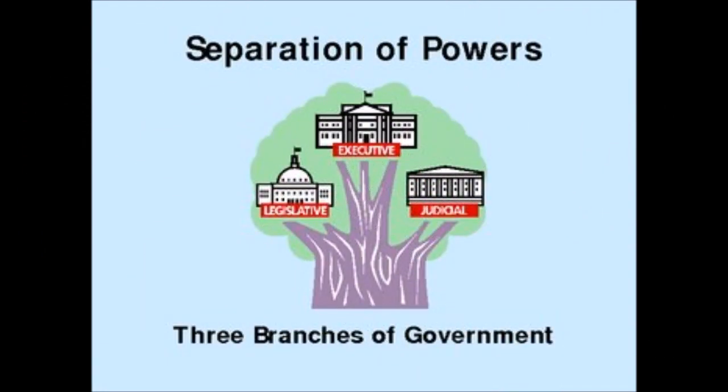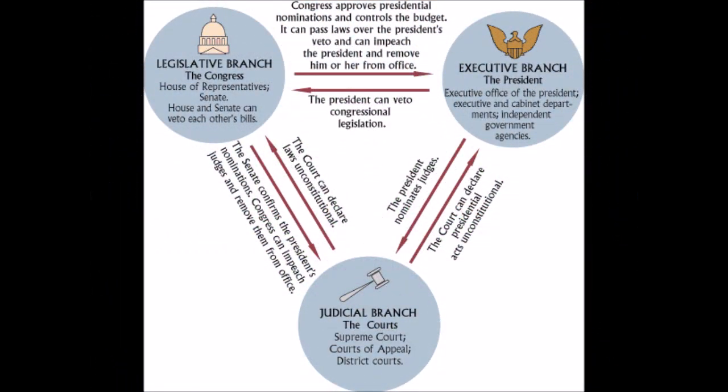These three branches of the federal government are constructed as such so as to provide for a separation of powers, which in England had been originally concentrated in the monarch, and then later distributed between the English monarch and the British parliament only. Uniquely, the American system of government decentralized political power even more so, as intended by the framers. This separation of powers also enjoys checks and balances, which means that if one branch becomes tyrannical, then one or both of the other two can act to halt the misbehaving branch from getting too much out of control.